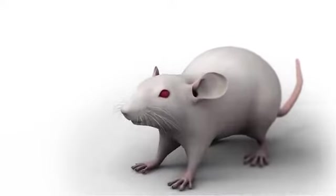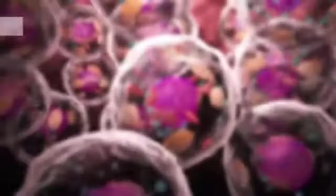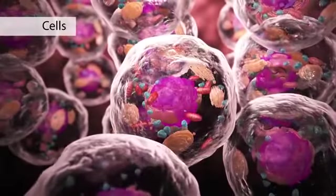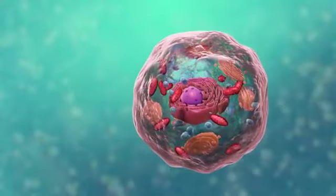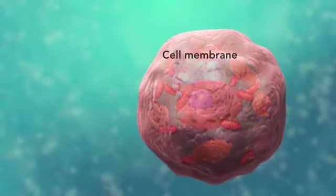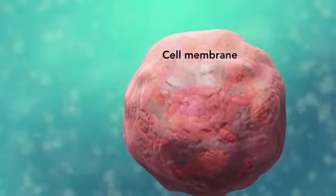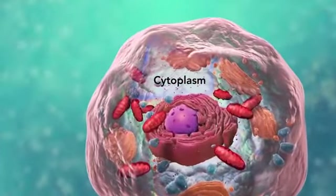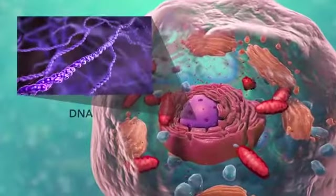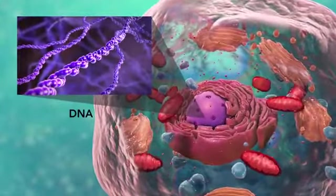Cells are the smallest living units of an organism. All cells have three things in common no matter what type of cell they are. All cells have a cell membrane which separates the inside of the cell from its environment, cytoplasm which is a jelly-like fluid, and DNA which is the cell's genetic material.